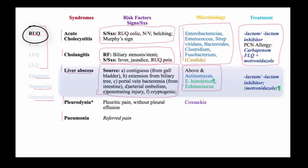E. histolytica liver abscess results from ingestion of the parasite, but usually it is not associated with the other characteristic manifestation of E. histolytica, which is colitis. There is a silent infection that seeds to the liver, leading to a liver abscess. Those who get colitis due to E. histolytica usually, surprisingly, do not get liver abscess.